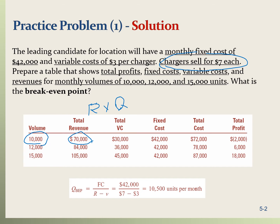The total variable cost is also a function of Q, the quantity: V multiplied by Q. The variable cost is $3 per charger, multiplied by 10,000 units — that's $30,000. Fixed cost is the same, $42,000, regardless of the volume. Adding variable cost and fixed cost gives a total cost of $72,000. The profit is total revenue minus total cost: $70,000 minus $72,000, so we have a $2,000 loss.